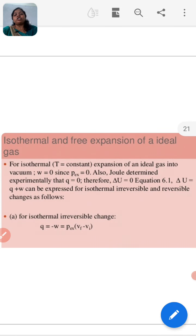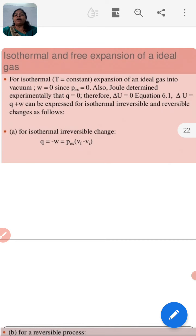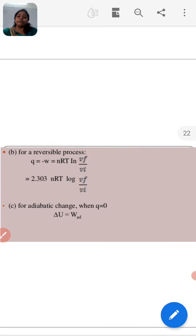Now, isothermal and free expansion of ideal gas. For isothermal, when T is constant, the expansion of an ideal gas into vacuum, w equals zero, so p_ex equals zero. Joule determined experimentally that q equals zero, therefore del u equals zero. So del u equals q plus w, del u equals q, and we can express for isothermal irreversible and reversible changes as follows. For isothermal irreversible changes, q equals minus w equals p_ex times (v_f minus v_i). For a reversible process, the values we get are 2.303 nRT log v_f upon v_i. And for adiabatic changes when q equals zero, del u equals w_ad.